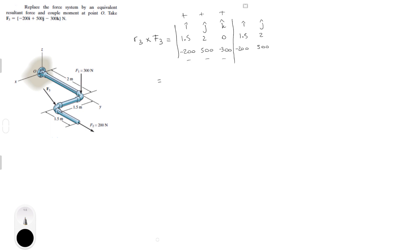Evaluating the diagonals: the first positive diagonal gives negative 600 I, the second is 0, and the third gives 750 K. It's good practice to leave a space for the J when doing complicated matrices. For the negative diagonals: negative 200 times 2 is negative 400, but as a negative diagonal it becomes positive 400 K. The second is 0, and negative 300 times 1.5 is 450, but being negative makes it positive 450 J. So R3 cross F3 equals negative 600 I plus 450 J plus 1150 K.